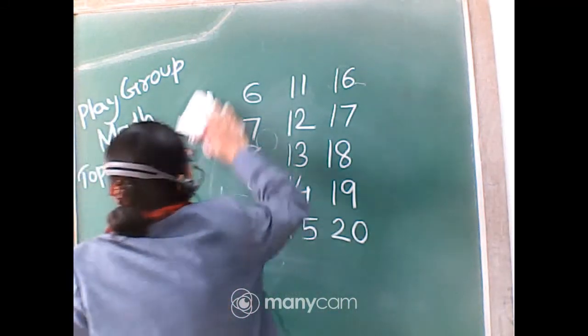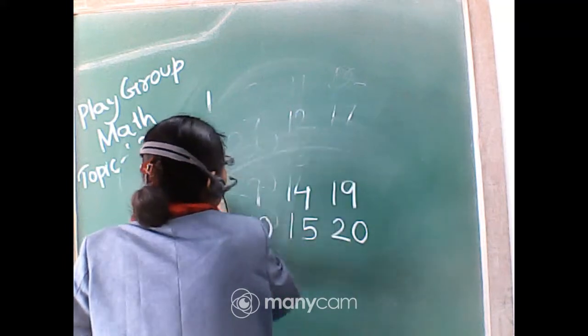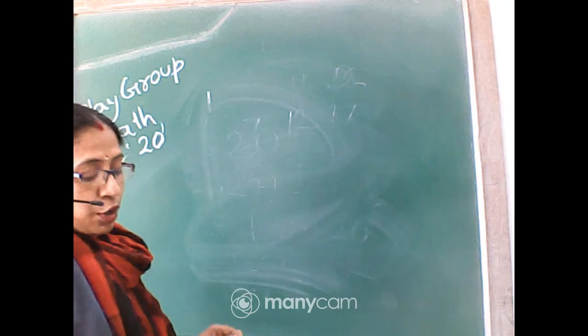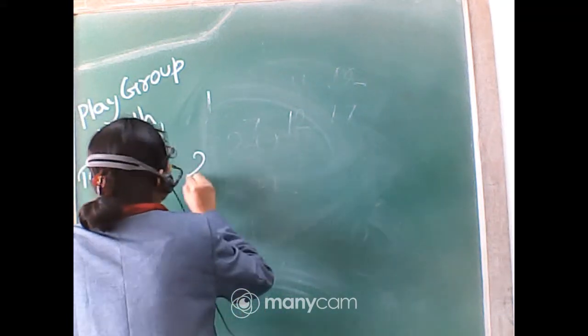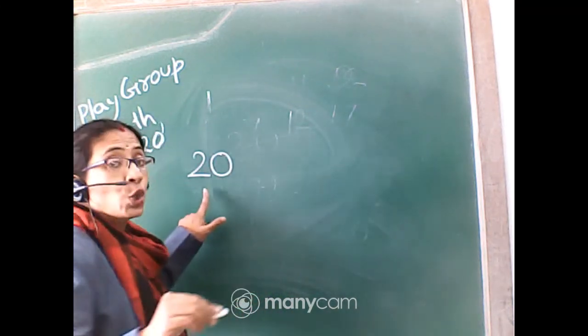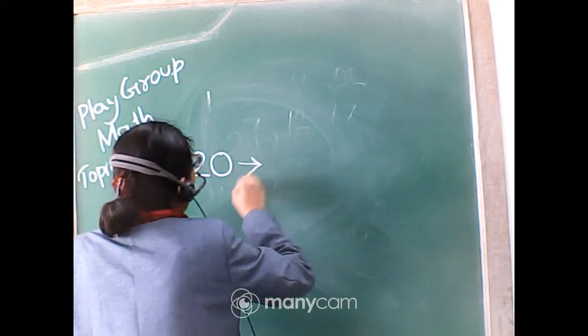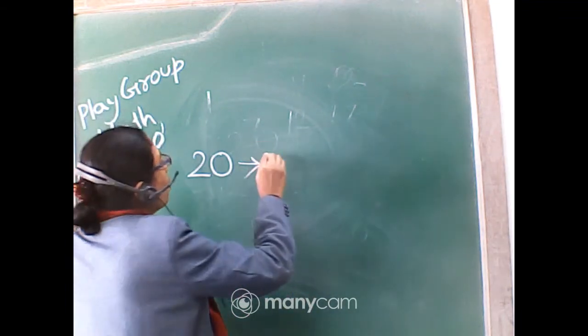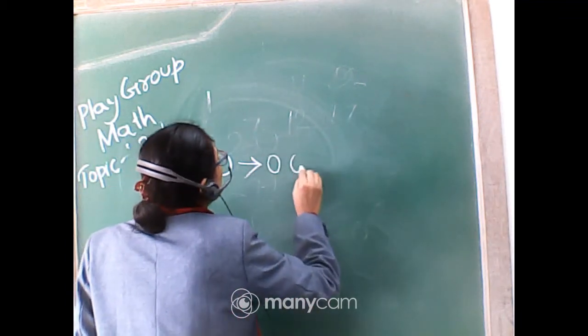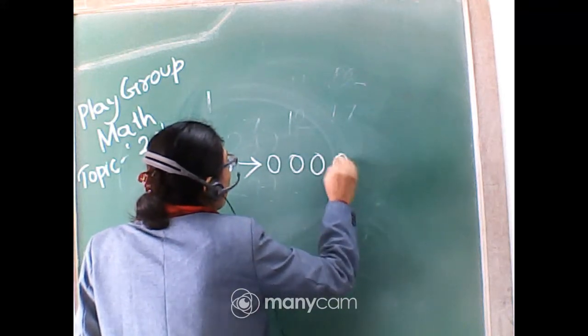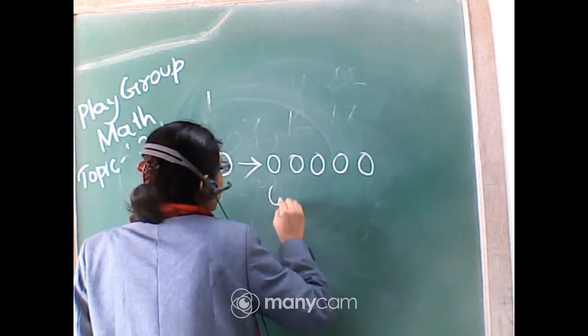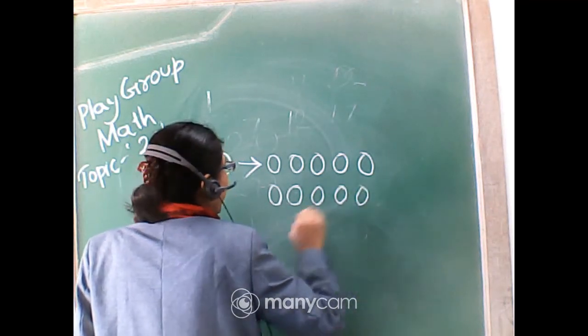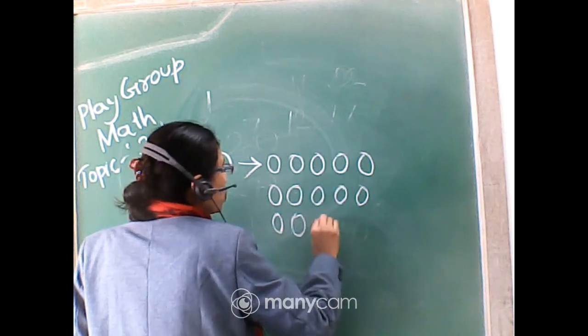Now, we know how you write 2, 0, which is 20. And if I draw circles against 20, so: 1, 2, 3, 4, 5, 6, 7, 8, 9, 10, 11, 1, 2, 12.